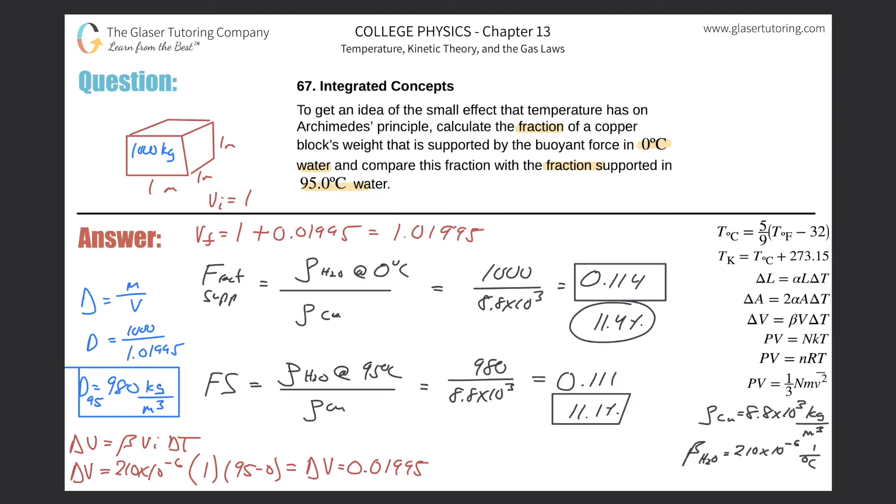You can take the original value here and divide it by this value and find out how many more times the water at zero degrees Celsius supports the weight of copper than at 95 degrees Celsius. I'm going to do that. I'm going to choose the exact values.